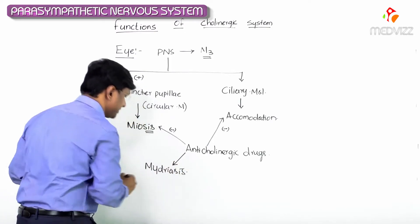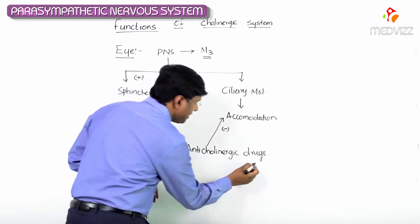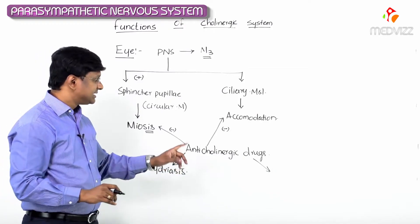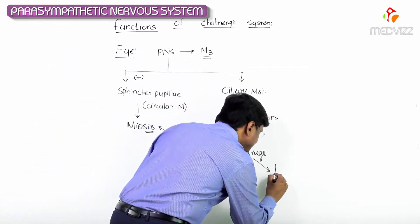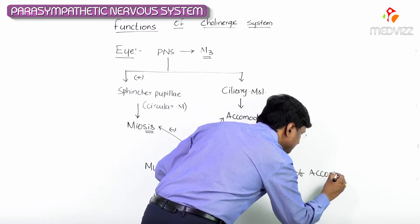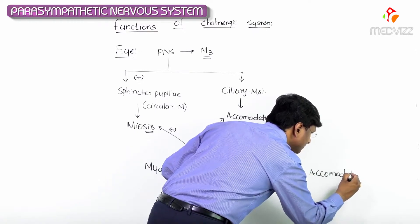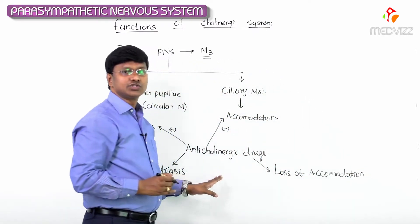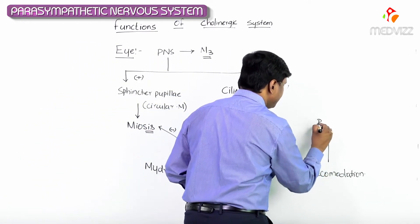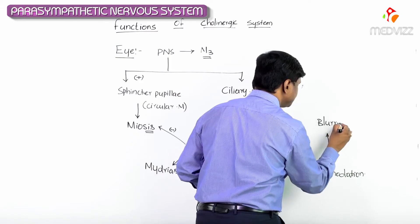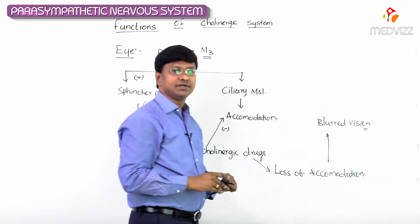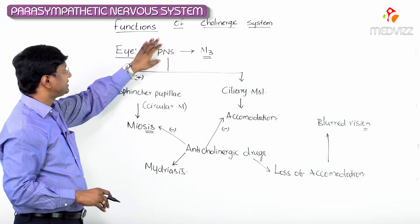By inhibiting the contraction of the ciliary muscle, there will be loss of accommodation. Because of this loss of accommodation, the individual will have blurred vision. That is the effect of the parasympathetic nervous system on the eye.